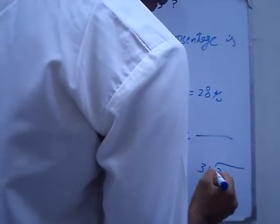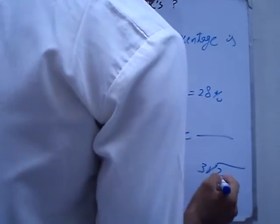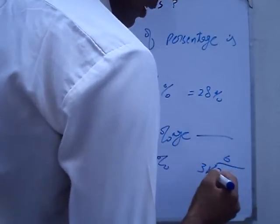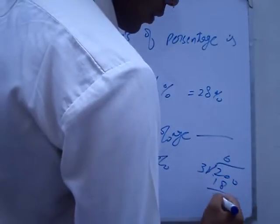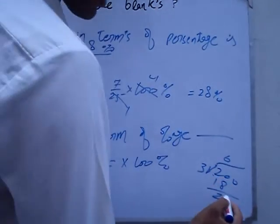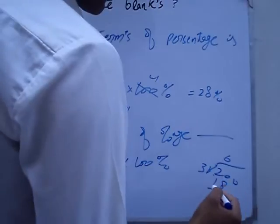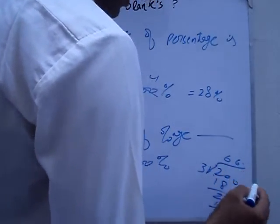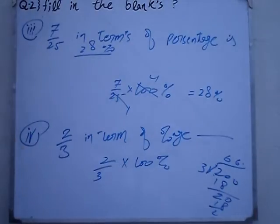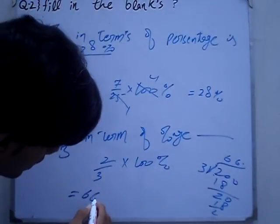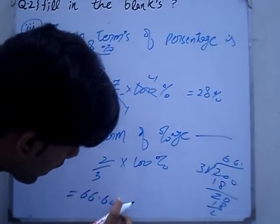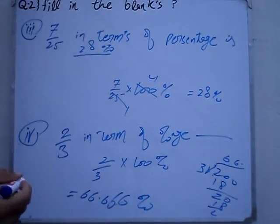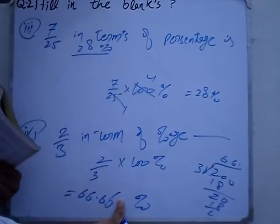Working on this division, we get 66... continuing the calculation gives us 66.66, and further we get 66.67%.